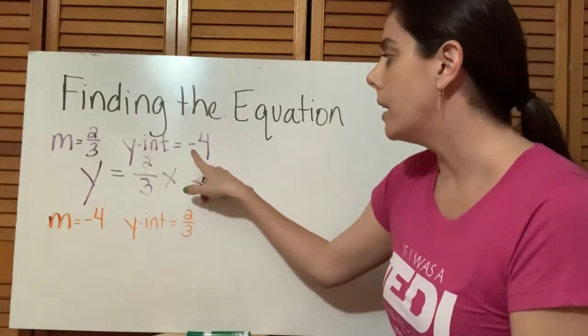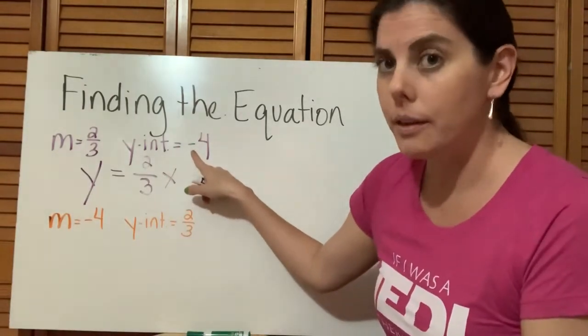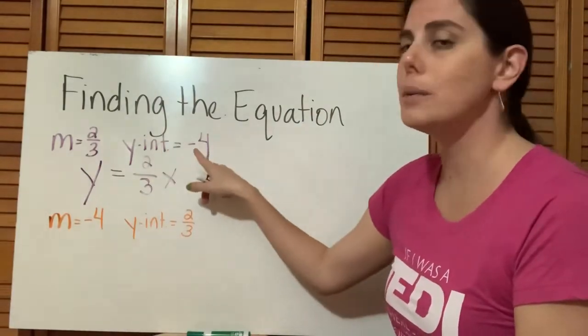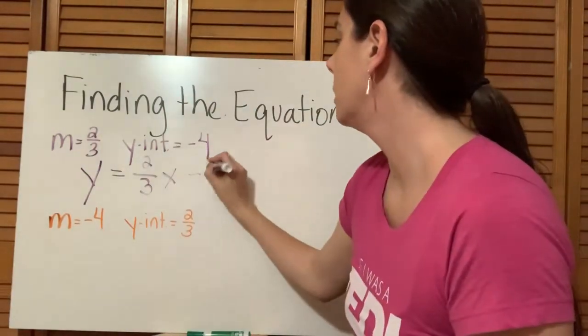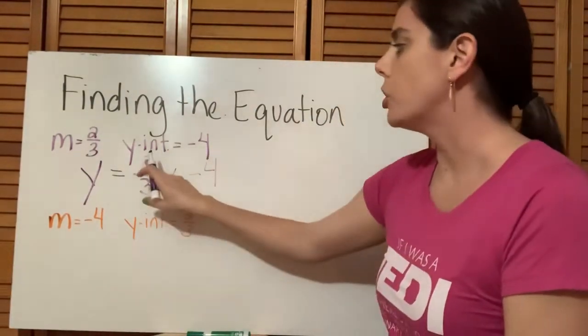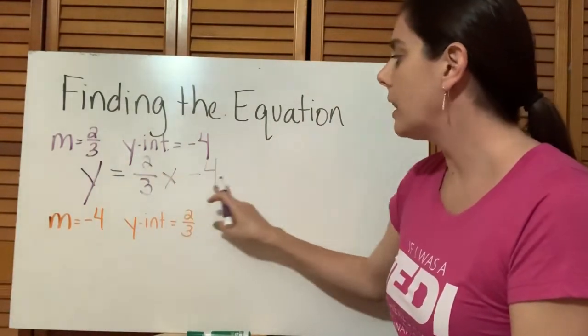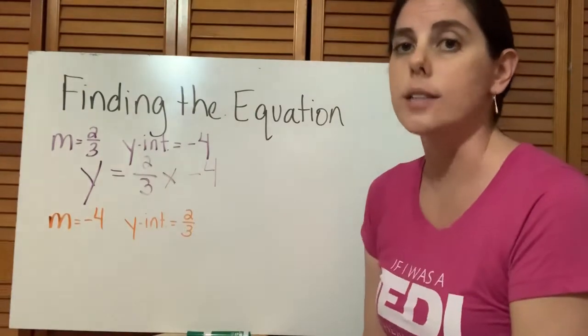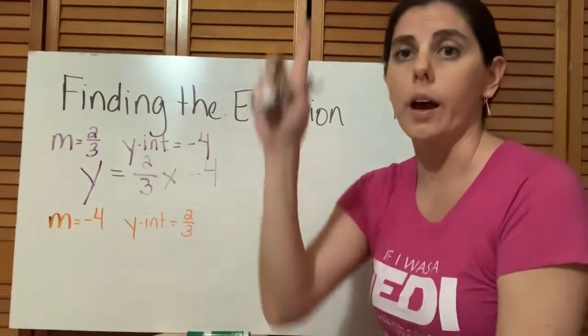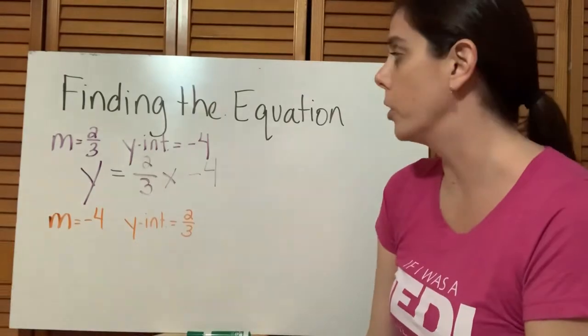So in this case, is it going to be a plus b or a minus b? Because our y-intercept is a negative 4, we would make two thirds x minus 4. So the sign that is in front of that constant is telling us if we're going up or down on our y-axis from the origin.